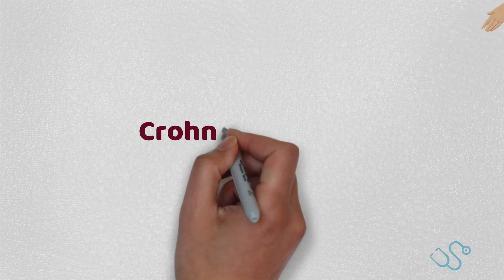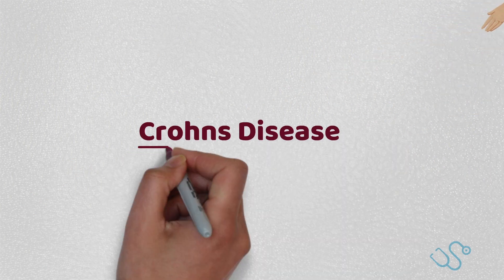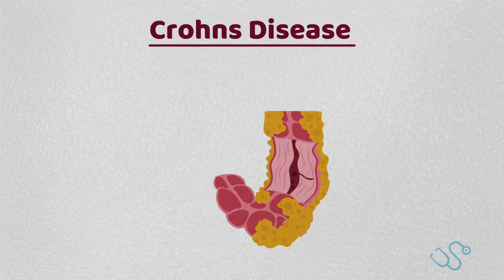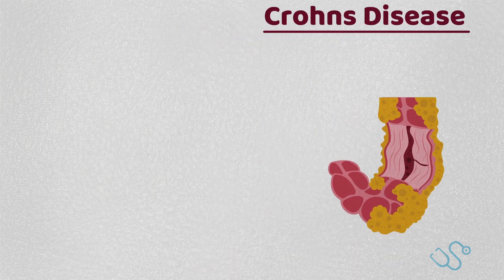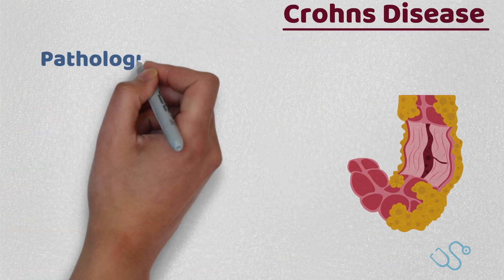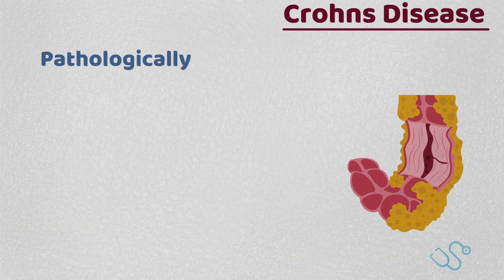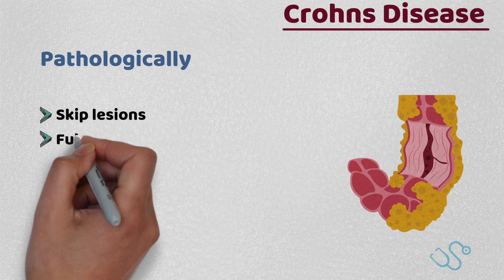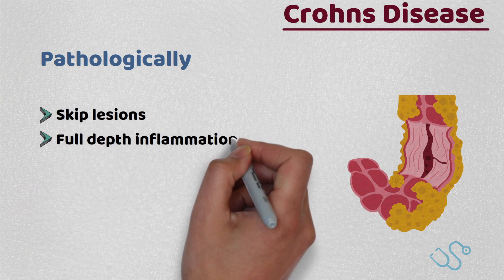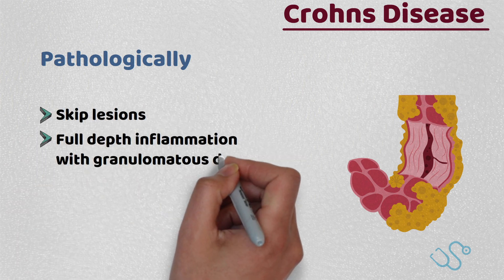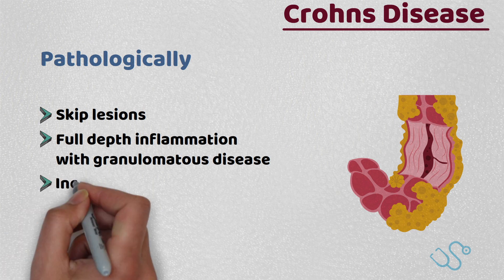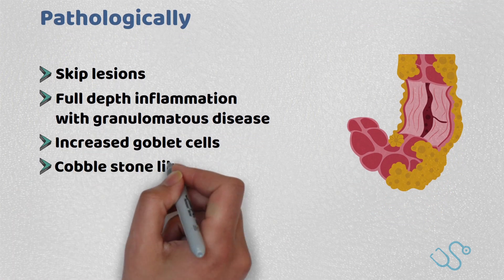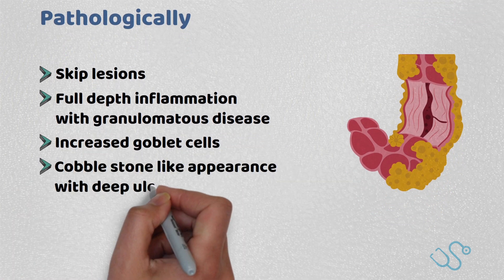Crohn's disease, in contrast to UC, typically affects the terminal ileum but can affect any part of the alimentary tract. Pathologically, there may be skip lesions, full thickness inflammation with granulomatous disease, and increased goblet cells. Endoscopically, there might be a cobblestone appearance with deep ulceration.